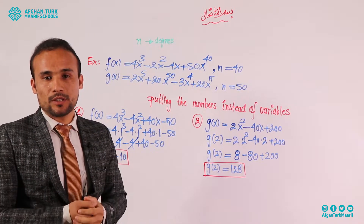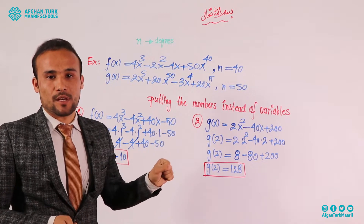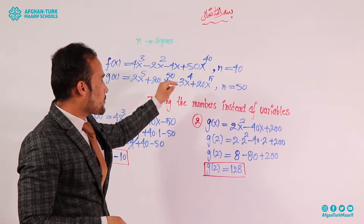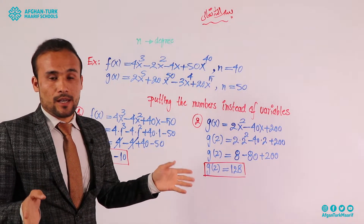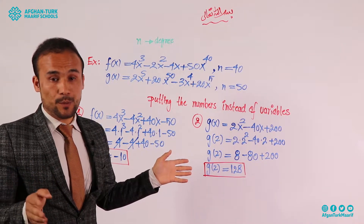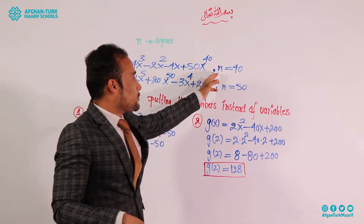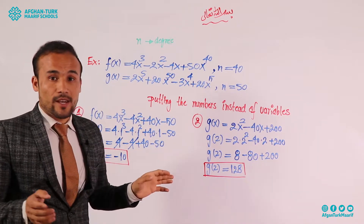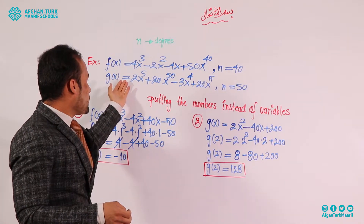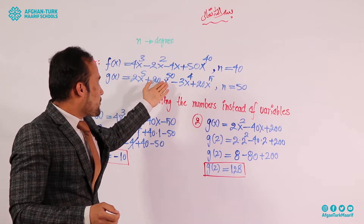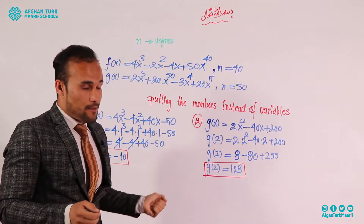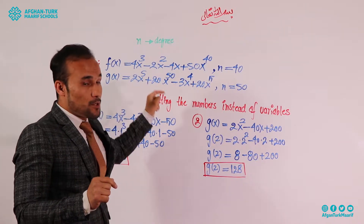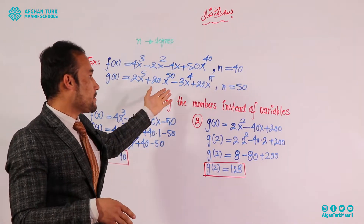We have two examples here. The first example: the polynomial f(x) = 4x³ − 2x² − 4x + 50x⁴⁰. The biggest exponent in this polynomial is 40, so the degree of this polynomial is 40 — n equals 40. In the second example, g(x) = 2x⁵ + 20x⁵⁰ − 3x⁴ + 20x⁵. This polynomial has four terms and the biggest exponent is 50, so the degree is 50 — n equals 50.